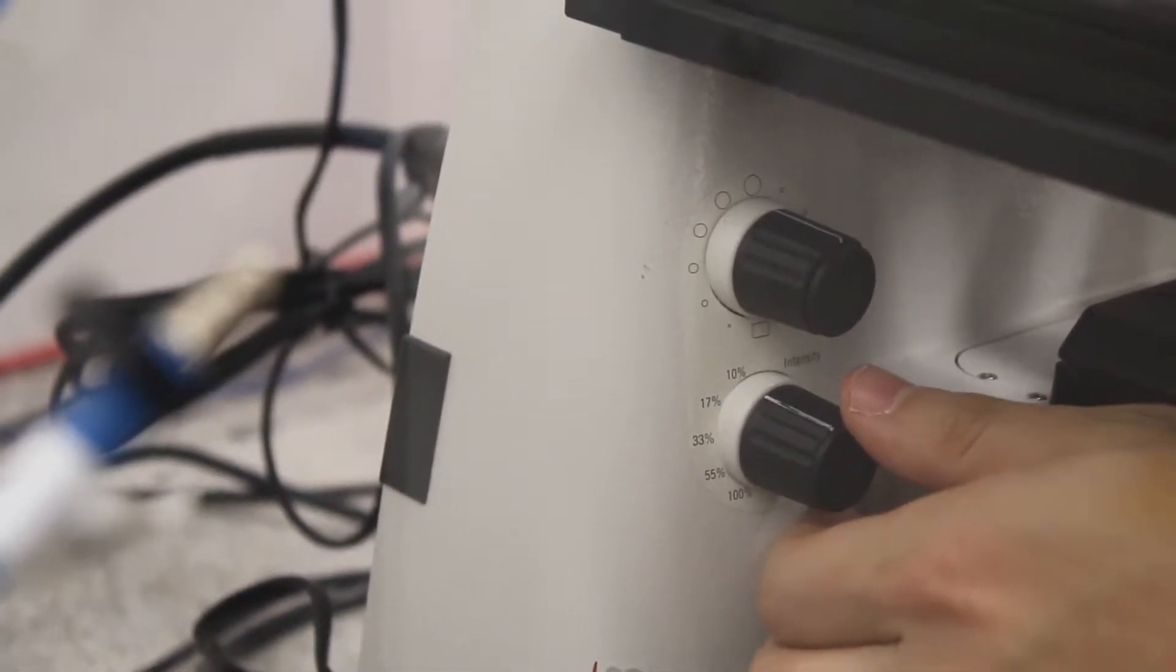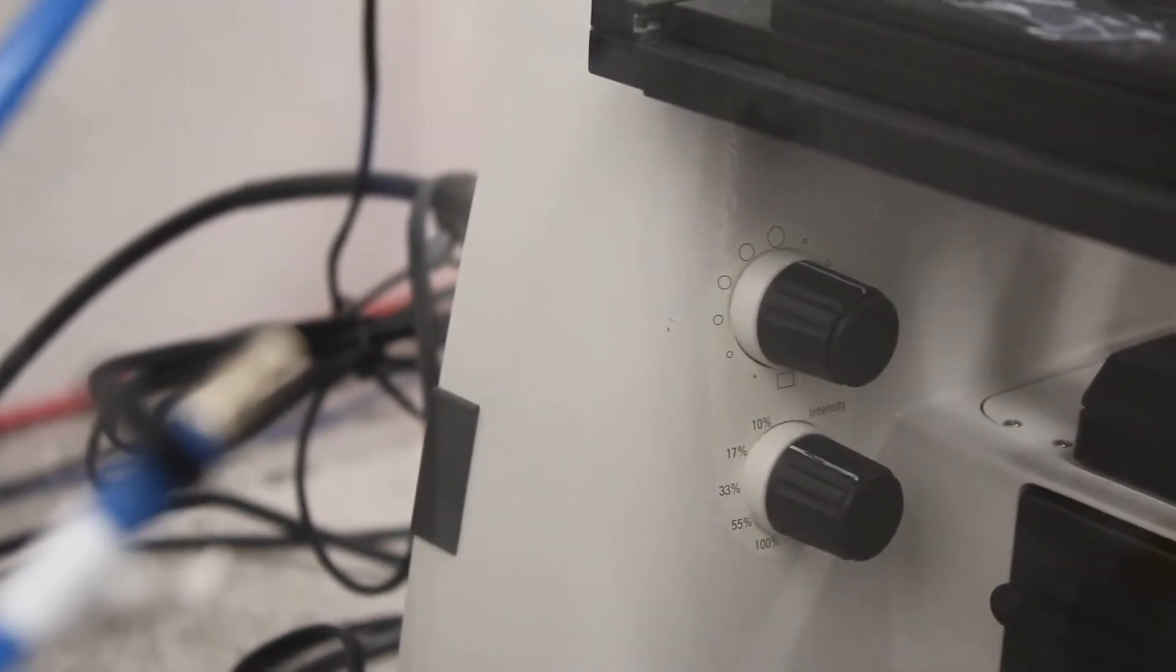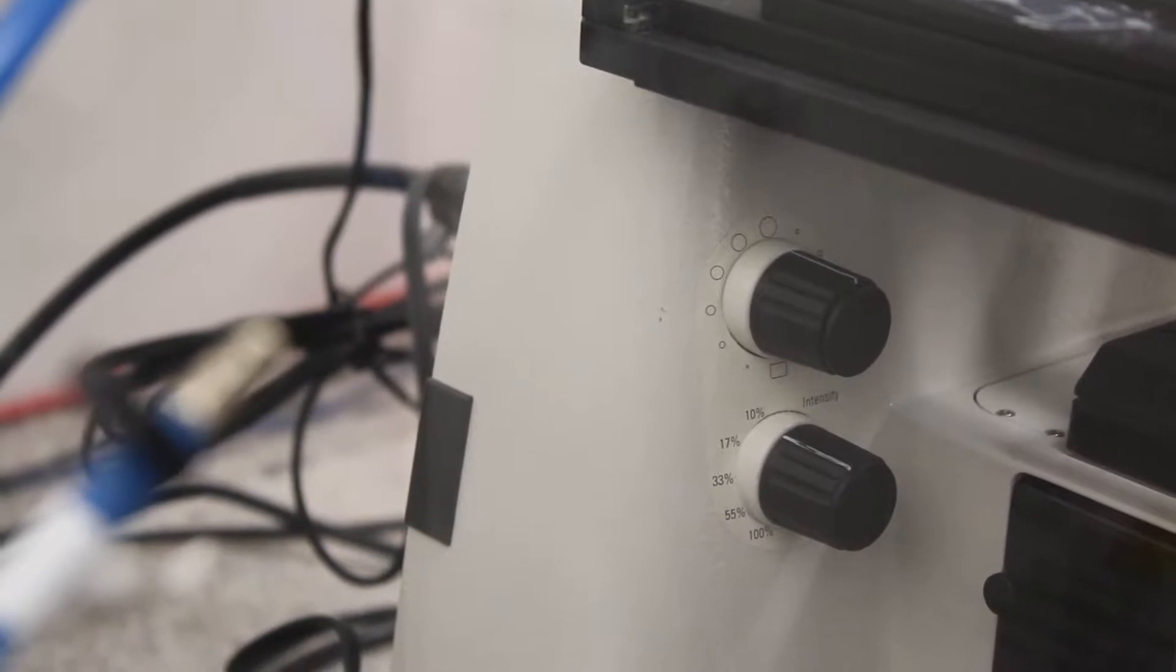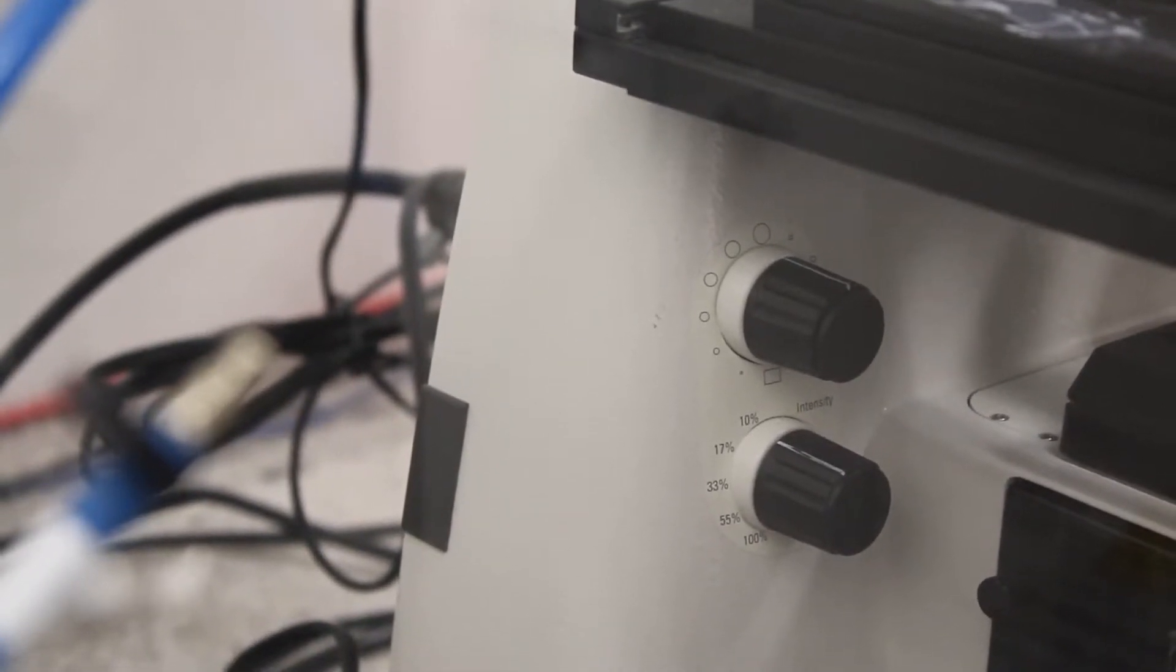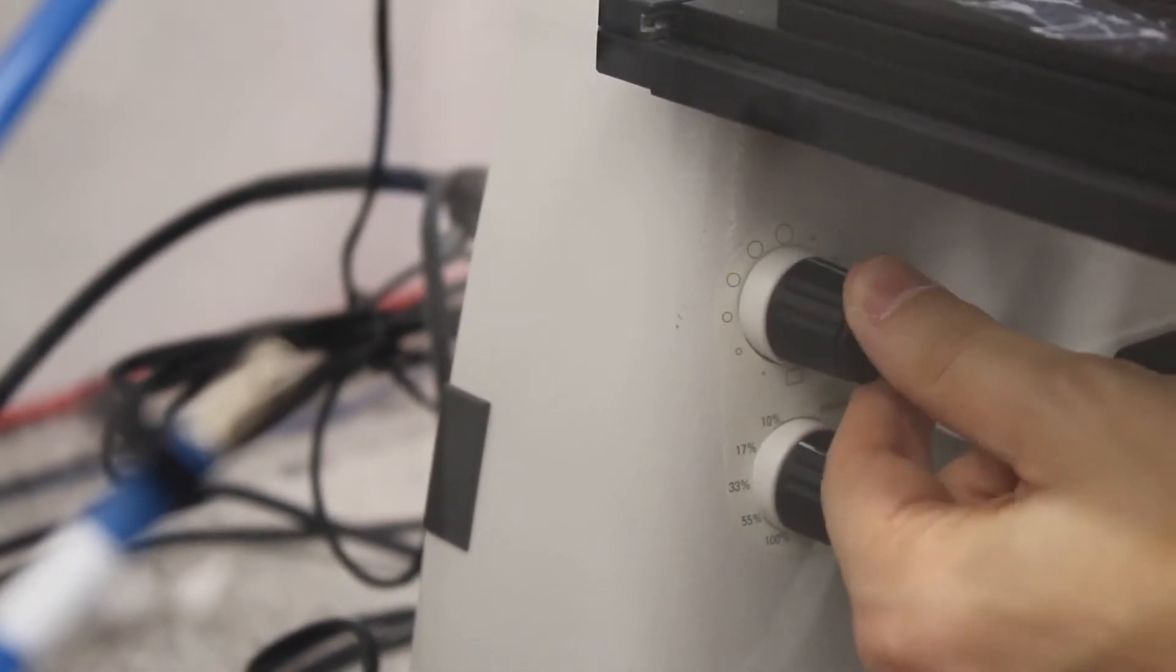33, 17, or 10%. And the top one will change the size of the irradiated area in your sample. So you can irradiate only a small portion of your sample by choosing again the size you want to irradiate.